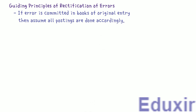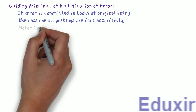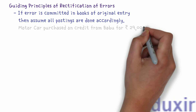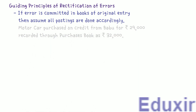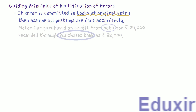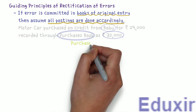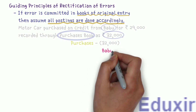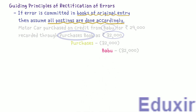Let us understand this by taking one example wherein the error is stated as: Motor car purchased on credit from Babu for 29,000 Rs. was recorded through the purchases book as 32,000 Rs. Here the error is committed in the purchases book, which is the book of original entry. So when this transaction is recorded in the purchases book, Babu's account is credited — but the amount recorded is 32,000 Rs. We assume all postings are done accordingly, meaning Babu's account will also be credited with 32,000 Rs.